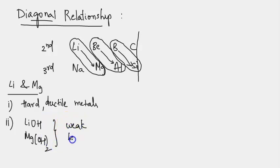These are weak bases because of their high electronegativity and high ionization energy. Because of the high electronegativity and high ionization energy, we can observe the weak basic nature in lithium hydroxide and magnesium hydroxide.